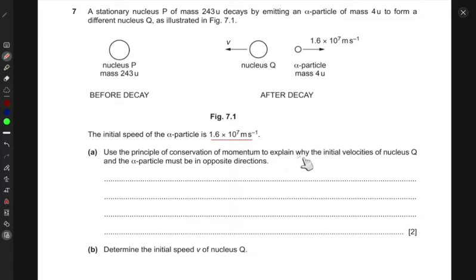Part (a) asks us to use the principle of conservation of momentum to explain why the initial velocities of nucleus Q and the alpha particle must be in opposite directions. Initially, nucleus P has no momentum because it's not moving, so the momentum initially is zero.